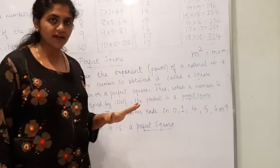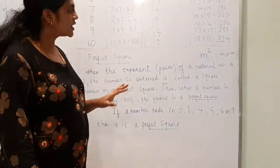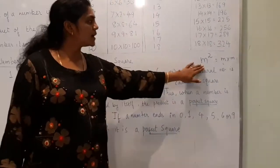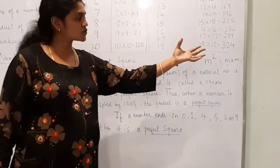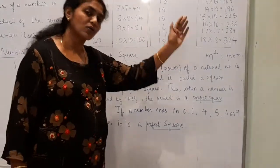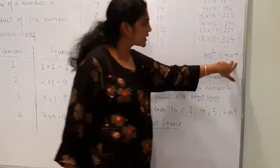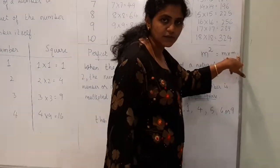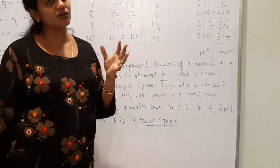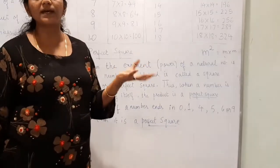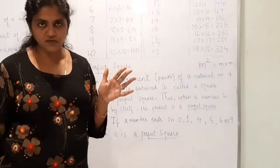So, square of a number means whenever there is a power 2 or exponent 2 of any natural number, it is called a square. When any number is multiplied by itself, the product you obtain is a perfect square.